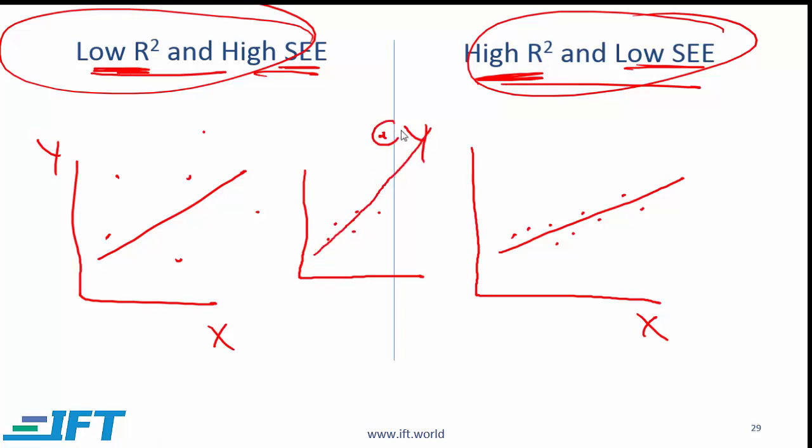Then you realize that this actually was an accident and you then from your data set remove this. What will be the impact on R squared? Will the R squared increase or decrease?